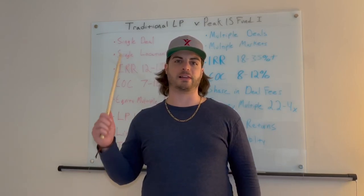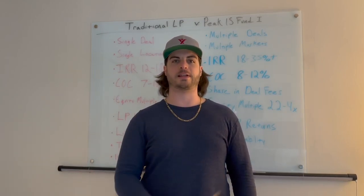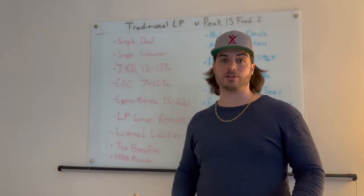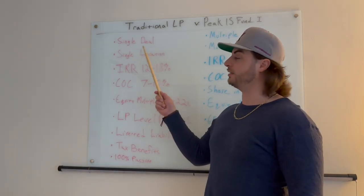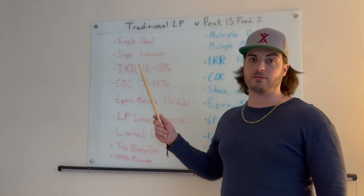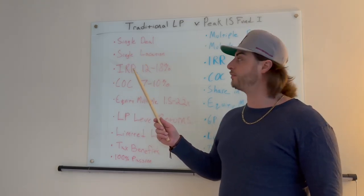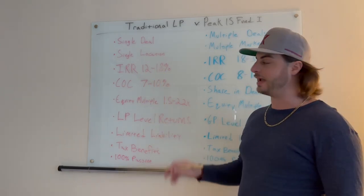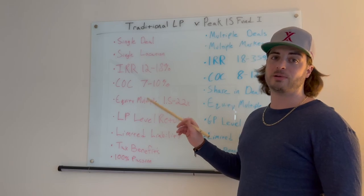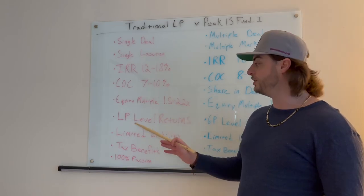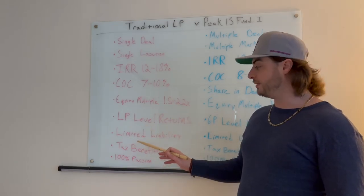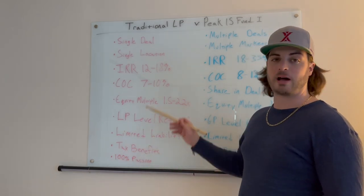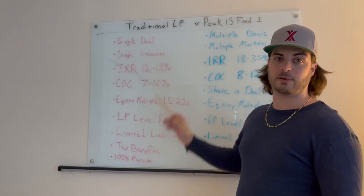Here are the major differences between investing as a limited partner in one deal and investing as a limited partner in Peak 15 Capital Fund 1. A traditional LP investment is a single deal in a single location. You're generally projecting IRRs anywhere from 12% to 18%, cash-on-cash return between 7% and 10%, and equity multiples between 1.5x and 2.2x. You get LP-level returns, limited liability, great tax benefits, and it's 100% passive. This is the traditional model that every syndicator has for its limited partner.